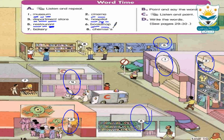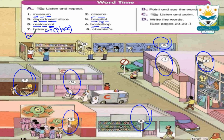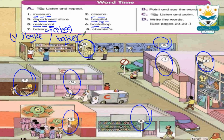Number seven: bakery — bakery means المخبز. This is a bakery. Bakery is a place. The verb from bakery is 'bake,' meaning يخبز. And the person who bakes is called a 'baker.' Write these words: bakery (المخبز), bake (يخبز), baker (الخباز). Number eight: chemist — chemist means صيدلية. Please write all of these words in your HW notebooks. HW2.